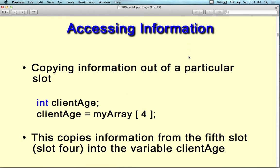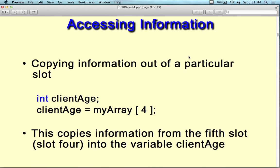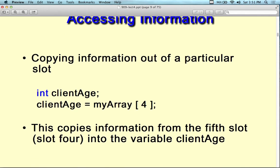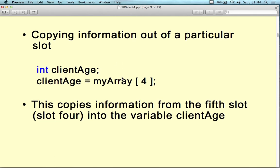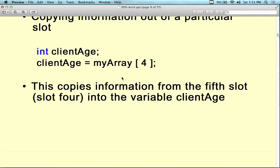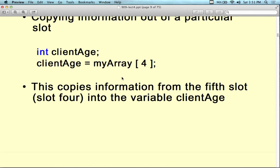For accessing information, it's proper to use the indexes. So copying information out of a particular slot: I can say integer clientAge, and clientAge is going to be equal to myArray[4], which is the fifth element of the array. So it copies the information from the fifth slot into the variable clientAge.